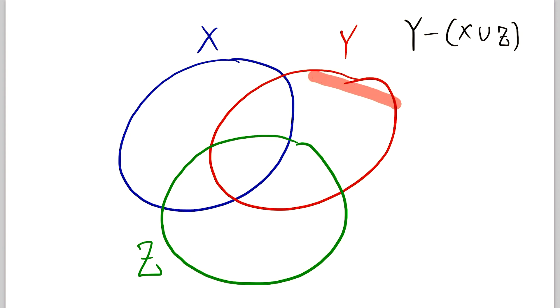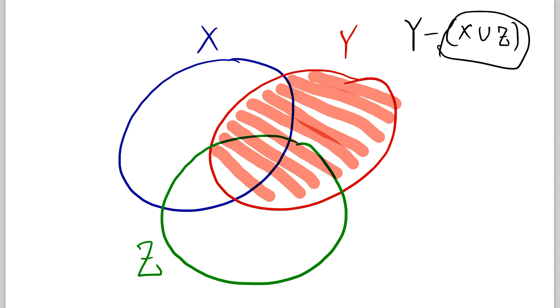So that's all of this stuff here that is contained in the red set Y. This is all of Y. And then out of that, we're taking X union Z.